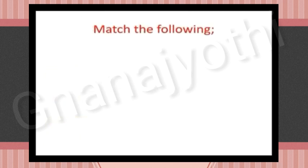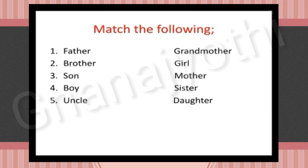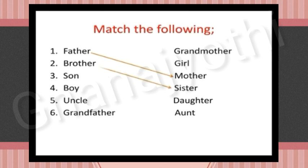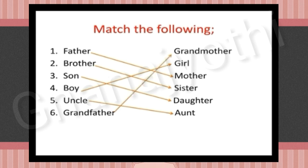The next exercise is: match the following. Here they have given a few names of family members; let us match each to its pair. First: father–mother. Second: brother–sister. Third: son–daughter. Fourth: boy–girl. Fifth: uncle–aunt. Sixth: grandfather–grandmother.